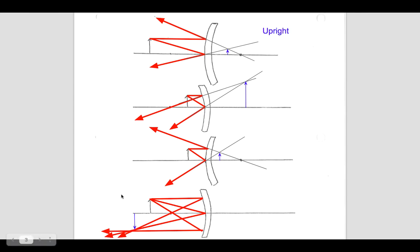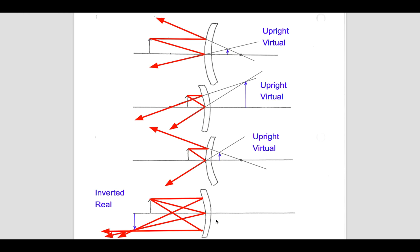To classify all these mirror images: the first one is upright — same orientation as the original object — and it's virtual because we had to trace the light rays to where they appear to be coming from, and the light rays can never actually go behind the mirror. The second one is also upright and virtual — behind the mirror. The third one is likewise upright and virtual. The only case where you get a real, inverted image is the bottom case: a converging mirror with the object outside the focal length — just like with lenses, where an object outside the focal length of a converging lens was the one case giving an inverted, real image. Those are ray diagrams for lenses and mirrors.